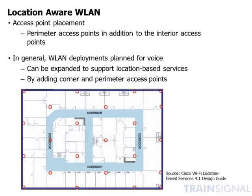When deploying location-aware access points, watch out for major obstructions. Large pillars, for example, can block certain signals, making it impossible for a device to be heard by three or more access points. Be careful where you place your access points if there are obstacles that could prevent the device from being heard.